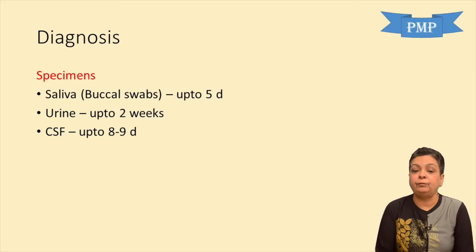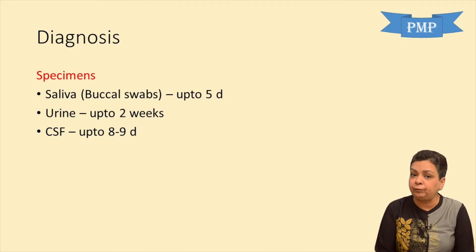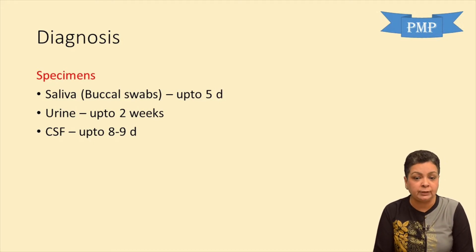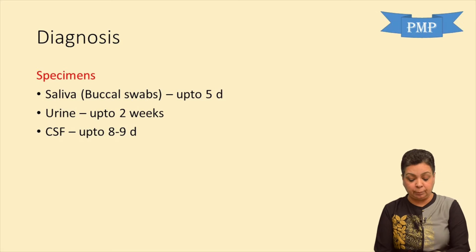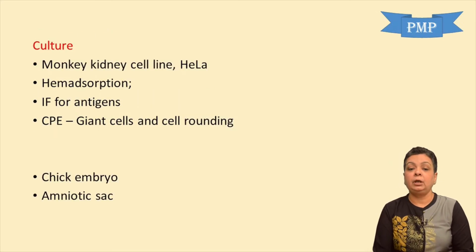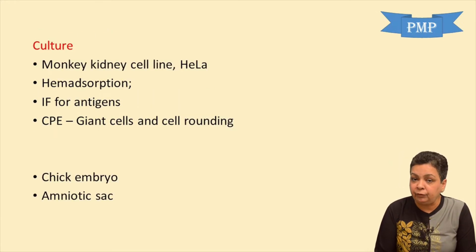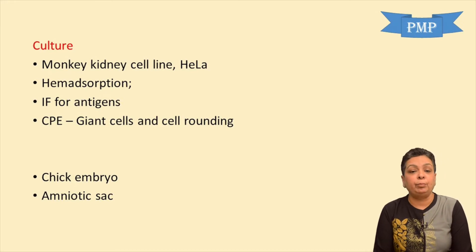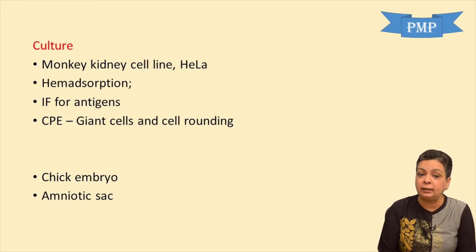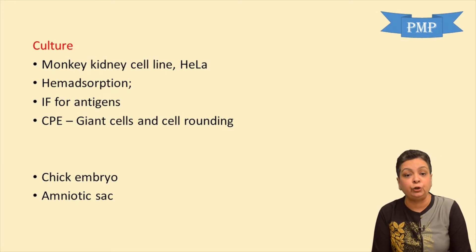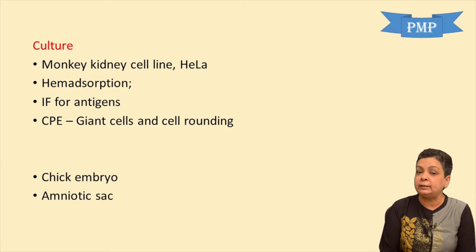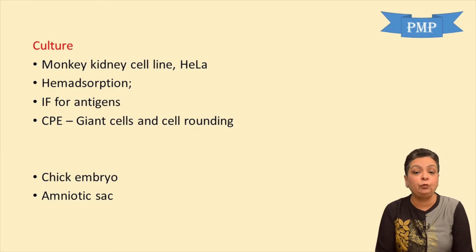For diagnosis of mumps, the following specimens are collected. Saliva is collected preferably by buccal swabs and is positive up to 5 days. Urine is positive up to 2 weeks. CSF is positive up to 8 to 9 days. After collecting the specimen, we can use cultivation, which is done on monkey kidney cell lines or HeLa cell lines. We can detect viral growth either by hemagglutination of fowl, guinea pig, or human RBCs.